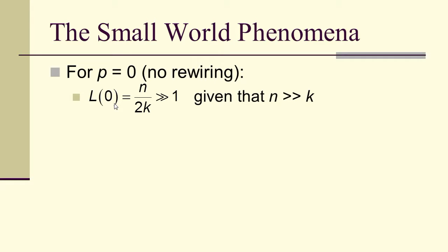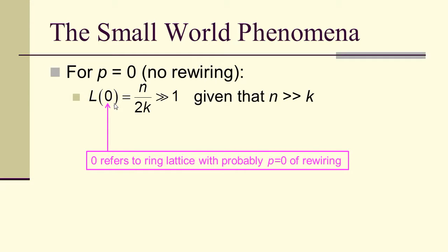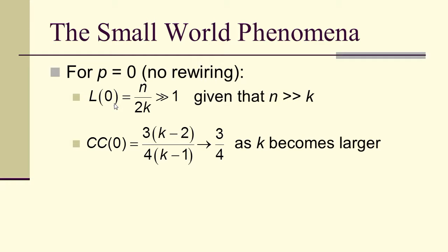For p equals 0, there's no rewiring. The average path length, which we'll call L(0), L here is going to be a function of p, that's n over 2k, and that's much much greater than 1, because we want to do this model when n is much much larger than k. So n over 2k is extremely large. The clustering coefficient for p equals 0 is 3 times (k minus 2) over 4 times (k minus 1), and as k becomes larger, that's 3 over 4. So that gives us a good measure. K is never going to be nearly as large as n, but k can be large. And notice that the clustering coefficient of 0 is independent of n.